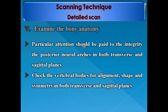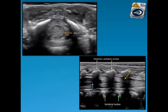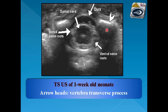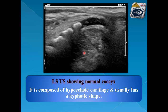The fifth question is: examine the bony anatomy. Particular attention should be paid to the integrity of the posterior neural arches in axial and sagittal planes. Check the vertebral bodies for alignment, shape, and symmetry. This is the lamina of the vertebrae, the nerve root, and anteriorly the vertebral bodies. The normal coccyx is composed of hypoechoic cartilage and usually has a triphasic shape with a mild triphasic curve.